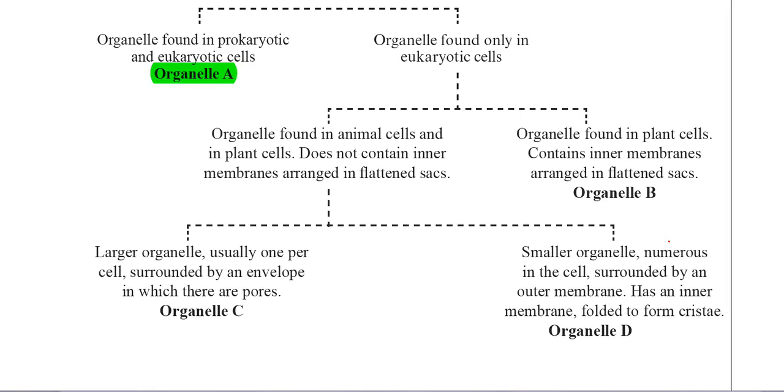So that organelle would be the ribosome, because it's made up of protein and ribosomal RNA – no membrane there. Over on the right-hand side, we have organelles now found in eukaryotic cells, and obviously there are far more descriptions under this heading because these cells have organelles.